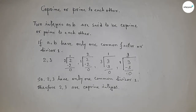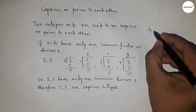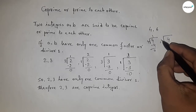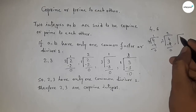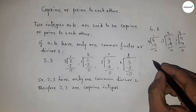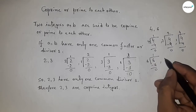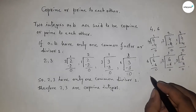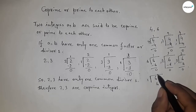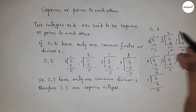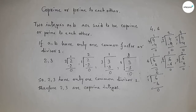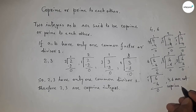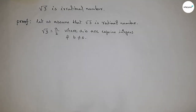Taking another example: 4 and 6. 4 can be divided by 4, 2, and 1 — so 4 has 3 divisors. 6 can be divided by 6, 2, 3, and 1 — so 6 has 4 divisors. We get two common divisors: 2 and 1, which contradicts our co-prime definition. So 4 and 6 are not co-prime.